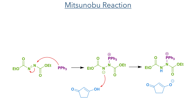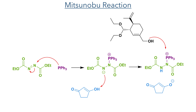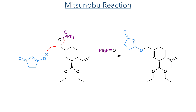This alcohol was then reacted in a Mitsunobu reaction. Triphenylphosphine adds to diethyl azodicarboxylate, more commonly known as DEAD, creating a zwitterionic intermediate which is able to deprotonate the hydroxyl group of the cyclopentanone. The primary hydroxyl group then acts as a nucleophile towards the phosphonium species, which activates it and allows it to act as an electrophile, displaced by the alkoxide forming the ether bond together with the elimination of triphenylphosphine oxide.